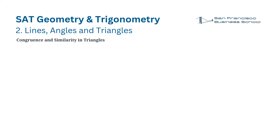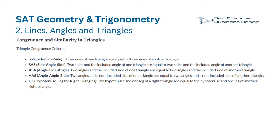Congruence and similarity in triangles. Triangle congruence criteria: SSS (three sides equal), SAS (two sides and included angle equal), ASA (two angles and included side equal), AAS (two angles and a non-included side equal), HL for right triangles (hypotenuse and one leg equal). Triangle similarity criteria: AA (two angles equal), SSS (corresponding sides proportional), SAS (two sides proportional and included angle equal).